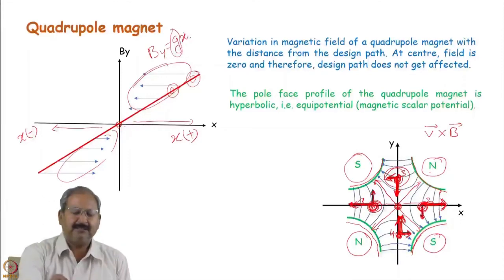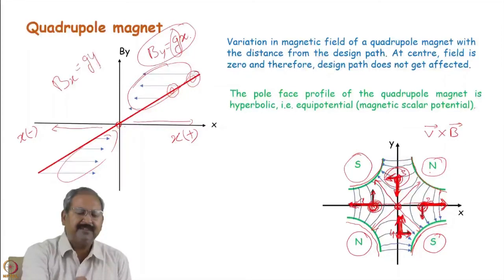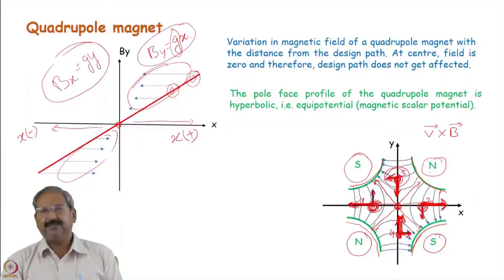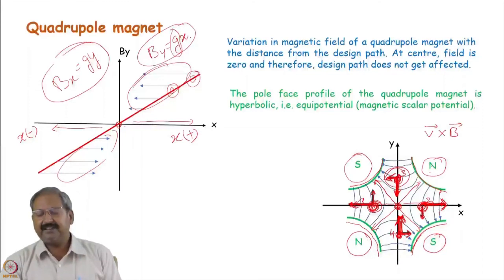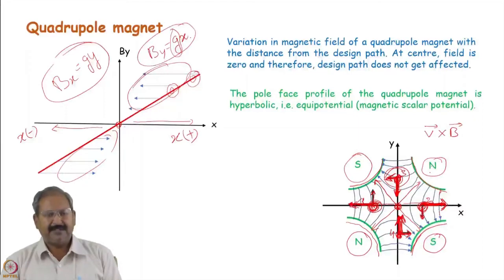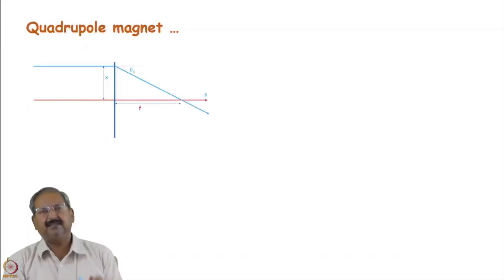Maxwell's equations compel us to have By = gx and Bx = gy, so a quadrupole magnet always focuses in one plane while defocusing in the other. If we rotate the quadrupole by 90 degrees (swapping north and south poles), focusing and defocusing planes are exchanged. Placing two quadrupoles rotated by 90 degrees gives a focusing-defocusing combination in one plane and a defocusing-focusing combination in the other — analogous to a convex-concave lens pair — achieving net focusing in both planes.